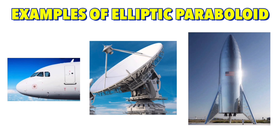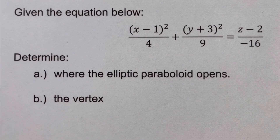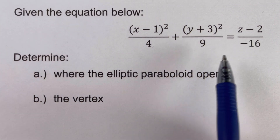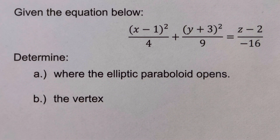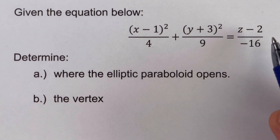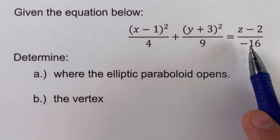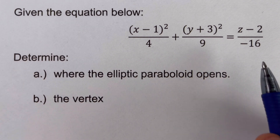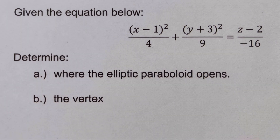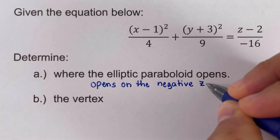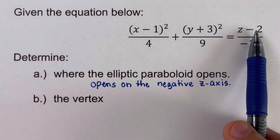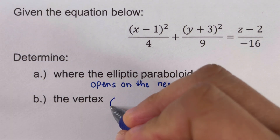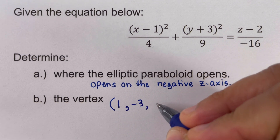Now let's go over some example problems. In this first example, we are given an equation of an elliptic paraboloid and need to determine where it opens and find its vertex. Since the denominator of the linear (z) term is negative, it opens on the negative z-axis. The vertex is given by h, k, and j, which here is (1, −3, 2).